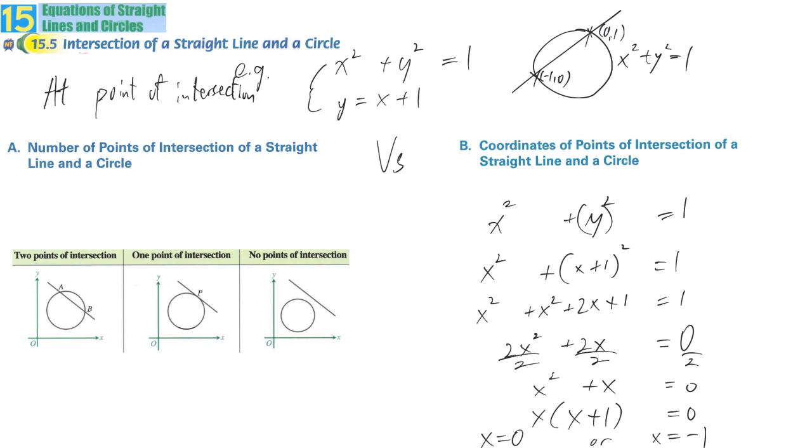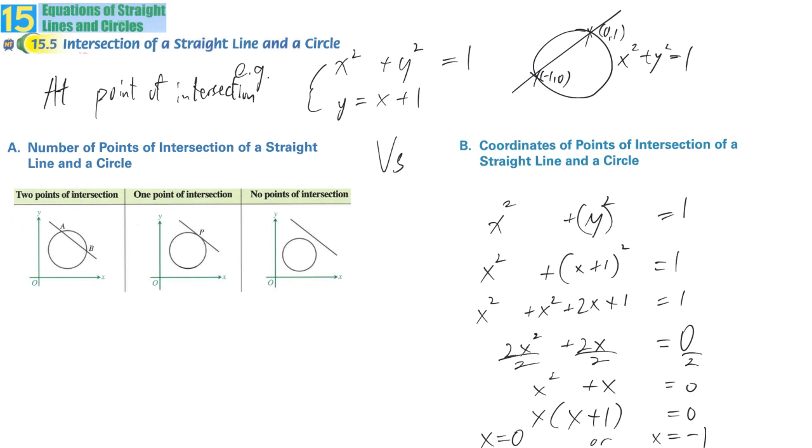In both situations, we're considering the simultaneous equation. But at this step, we get 2x² + 2x + 0 = 0, written in quadratic format. When we ask how many points, we're asking how many real roots there are. Therefore, you use the method to distinguish how many real roots, which is delta.